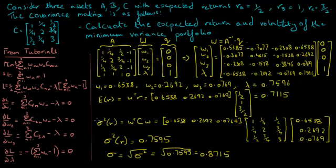In this question, we followed the methodology learned in tutorials to solve for the weights of the minimum variance portfolio, as well as compute the expected return and volatility using those weights. If there are any questions or comments, please feel free to post.